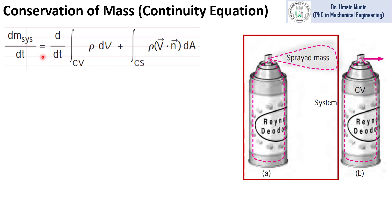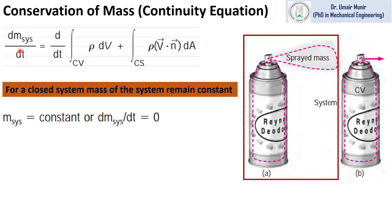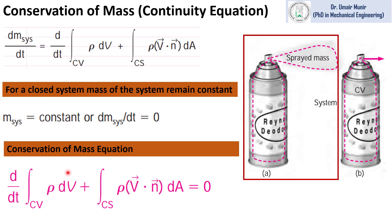We have the continuity equation in this form and we have discussed the example of the Duton spray bottle. As discussed earlier, system mass does not change for a closed system — no mass can cross the boundaries. That means this term will be equal to 0 if the system mass remains constant. So if we set this value equal to 0, the continuity equation takes this form.